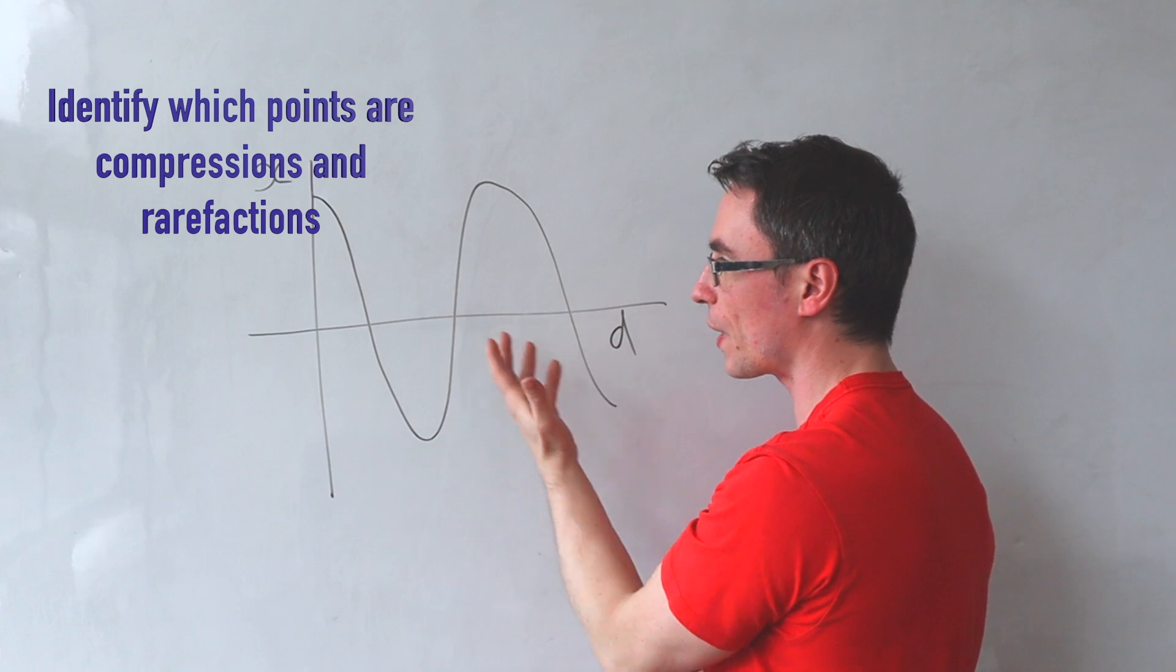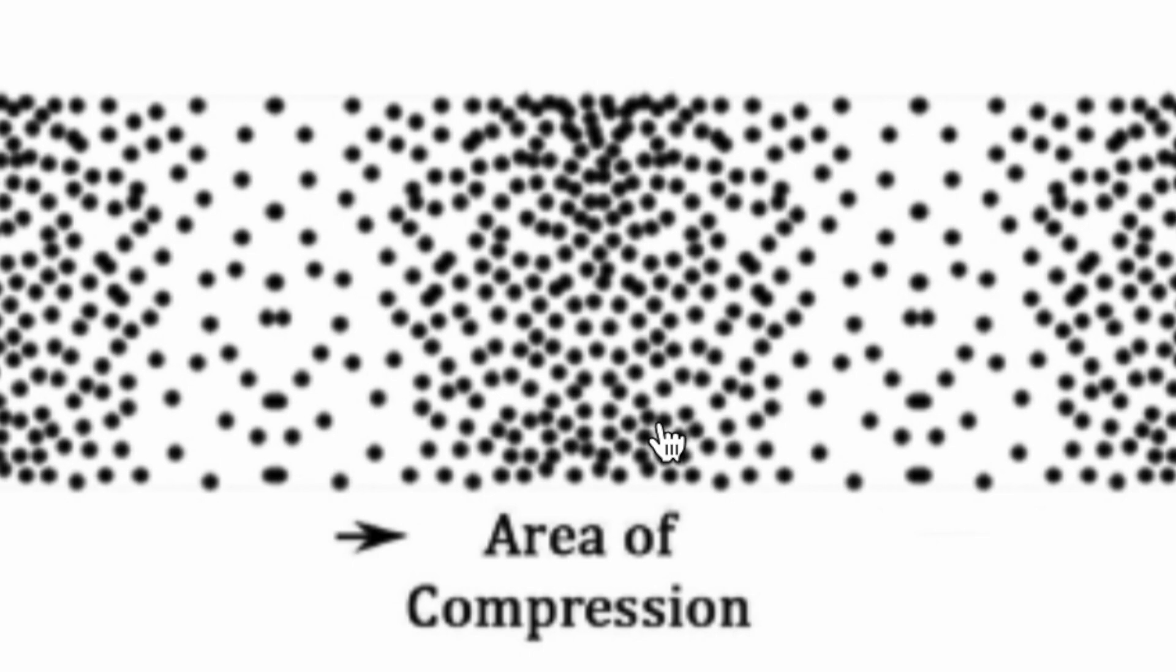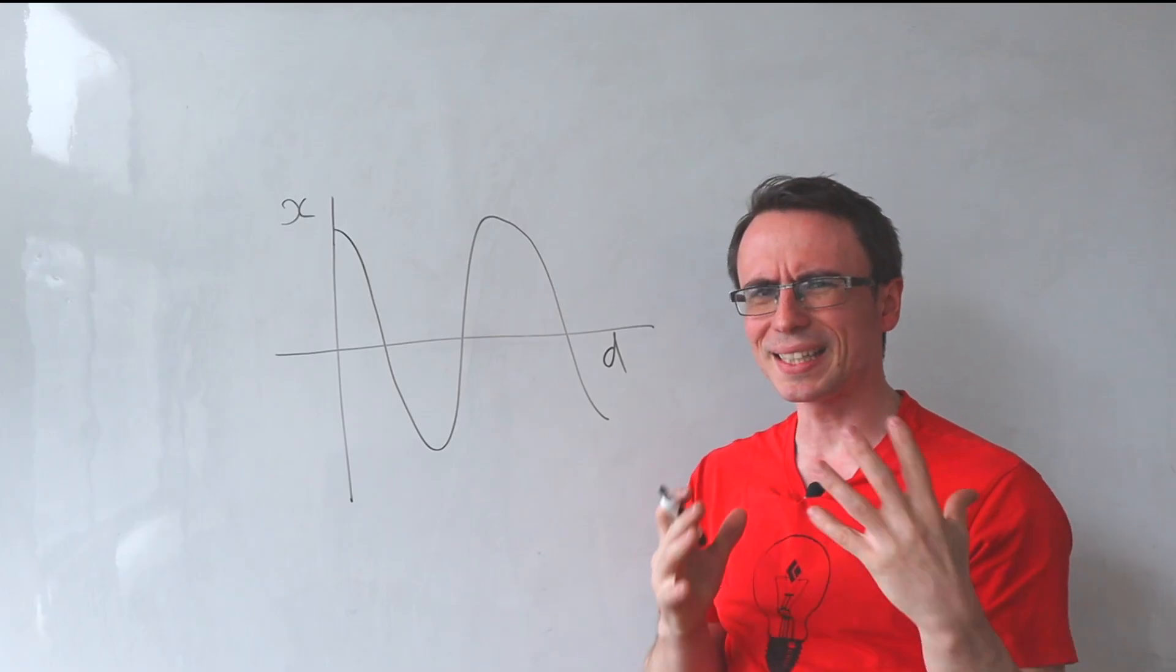can you identify which points on the graph are rarefactions and which are compressions? Hmm, this is quite tricky.